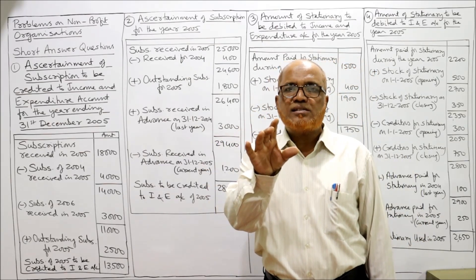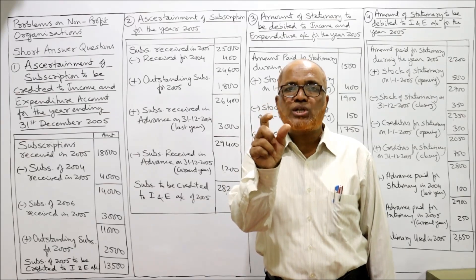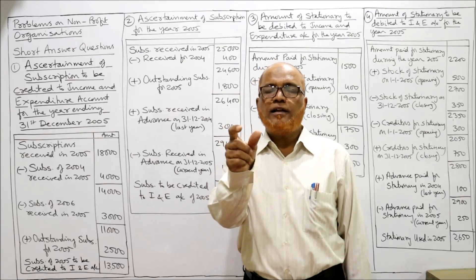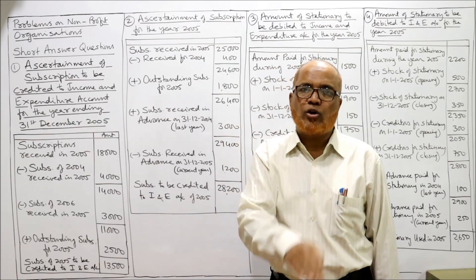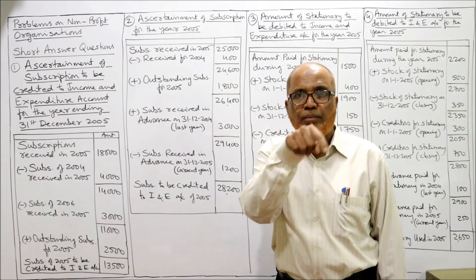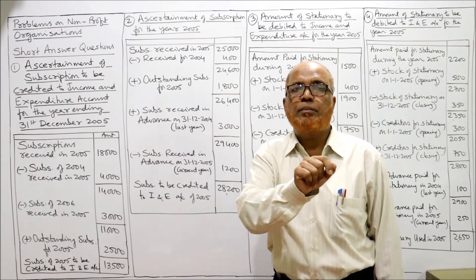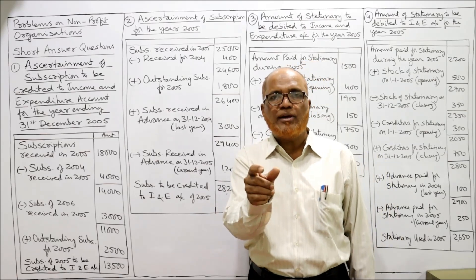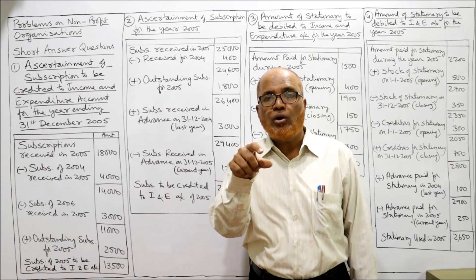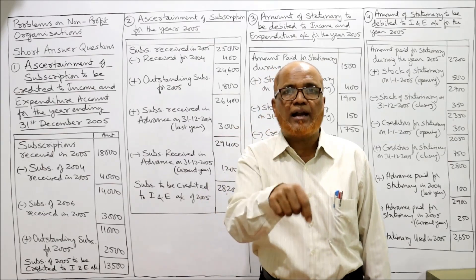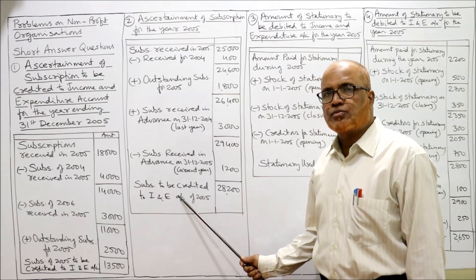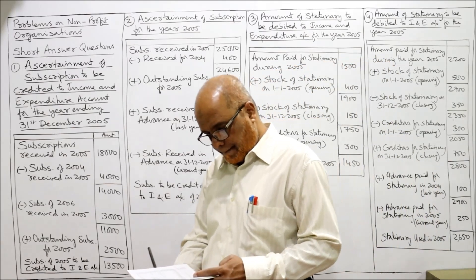Here is the general rule to find subscription income: take subscription received during the year. Add outstanding subscription at the end of current year. Minus outstanding subscription of last year. For received in advance: last year's received in advance will be added, and current year's received in advance will be deducted. So current year end advance is minus, last year advance is plus. Similarly, current year outstanding is added, last year outstanding is subtracted. This is how we find subscription to be credited to income and expenditure account.